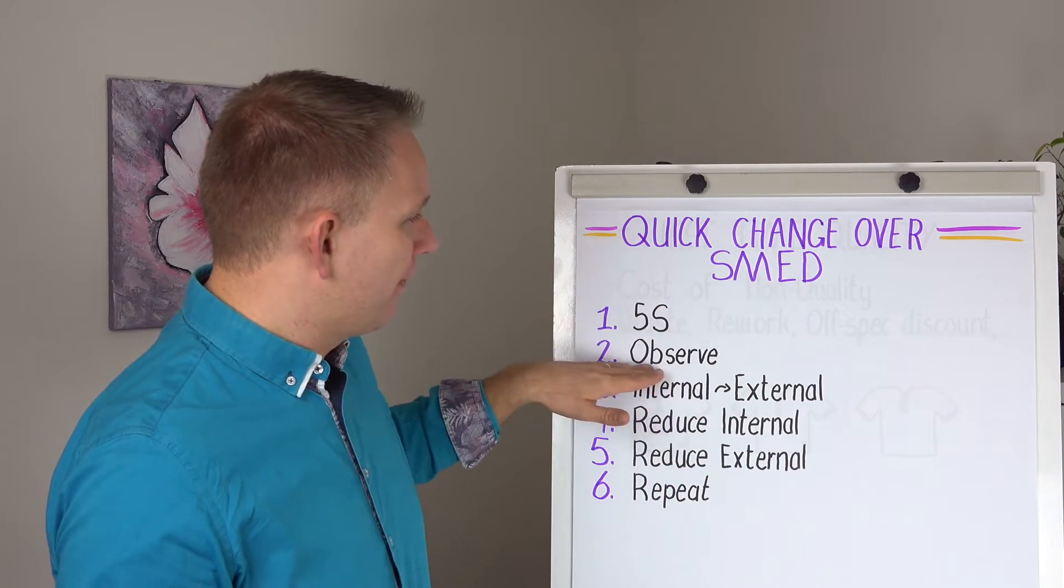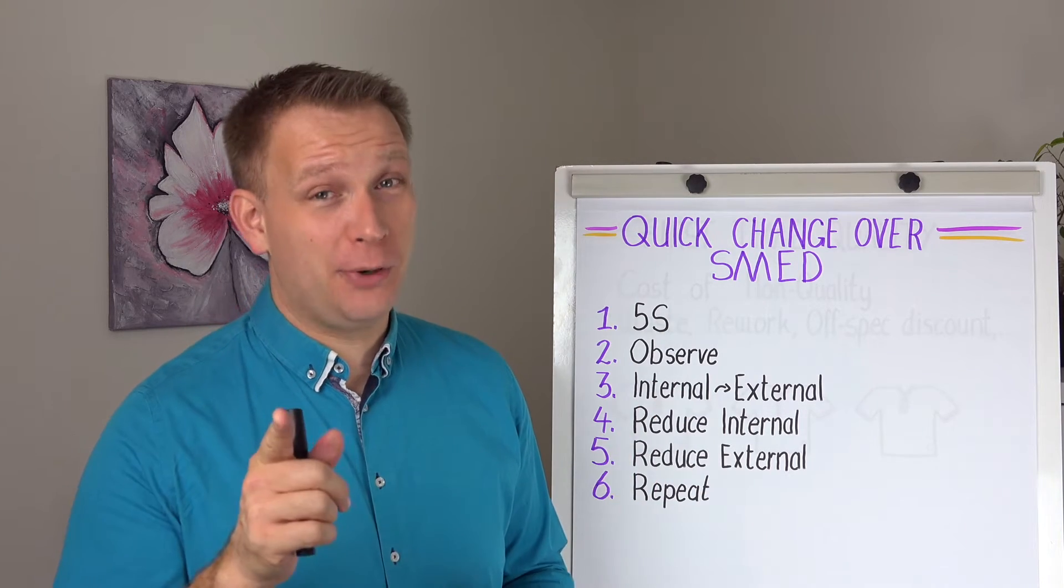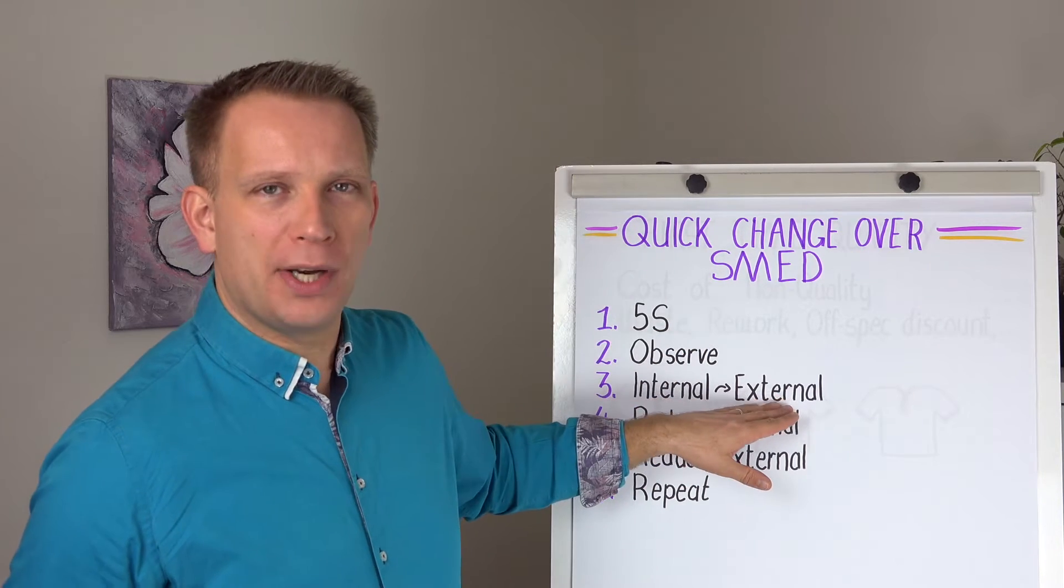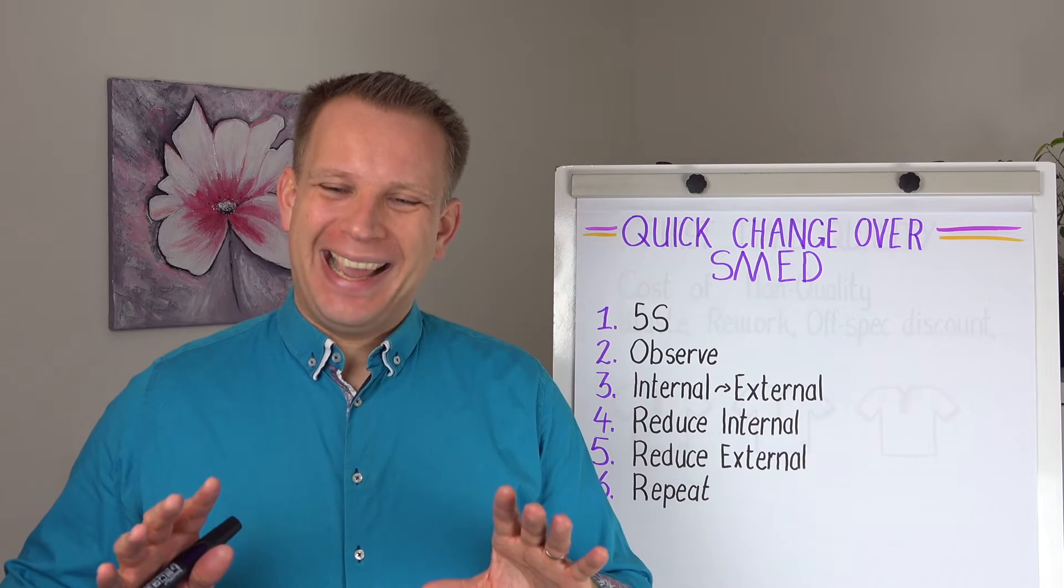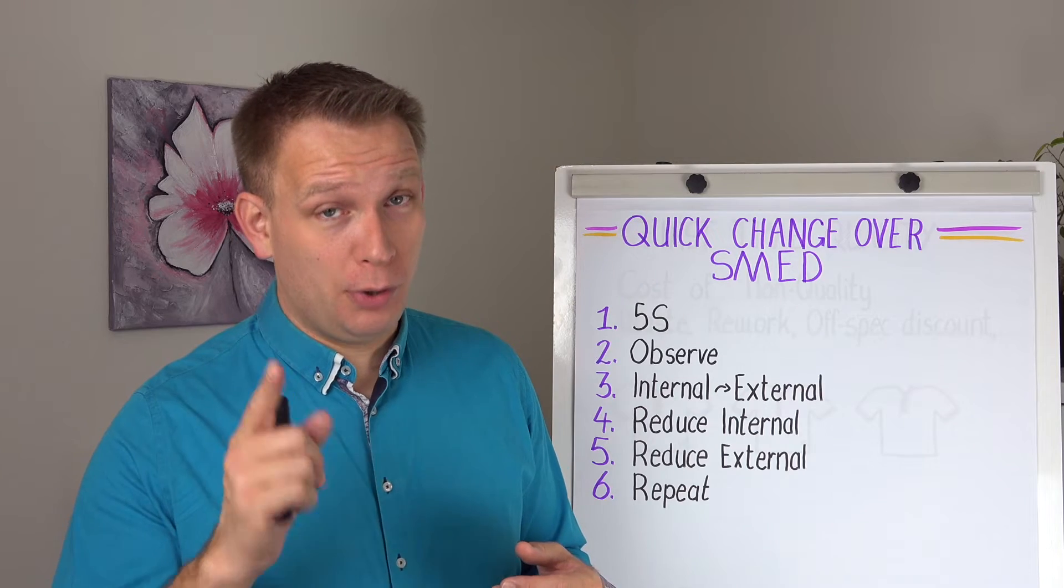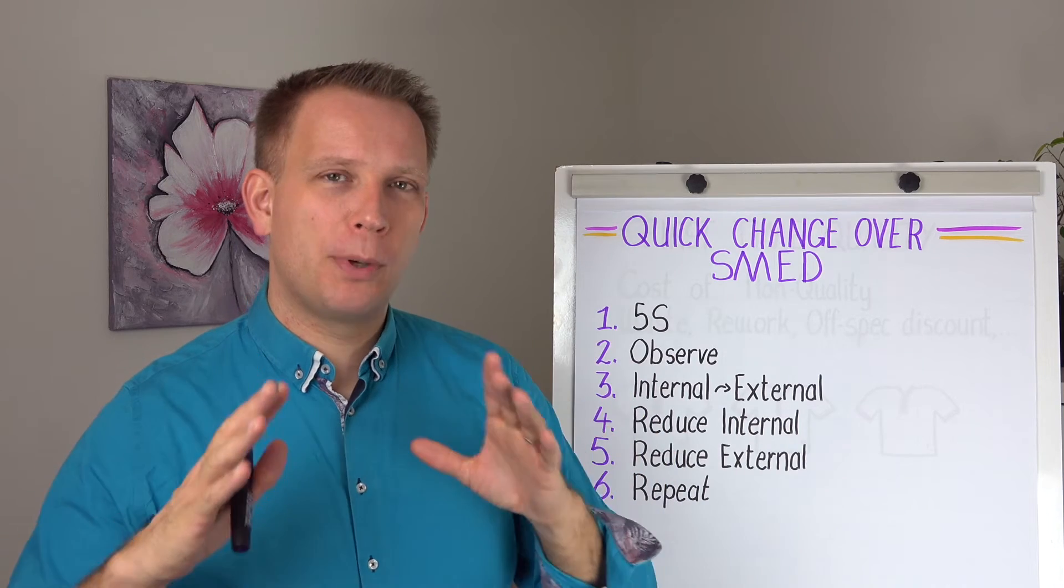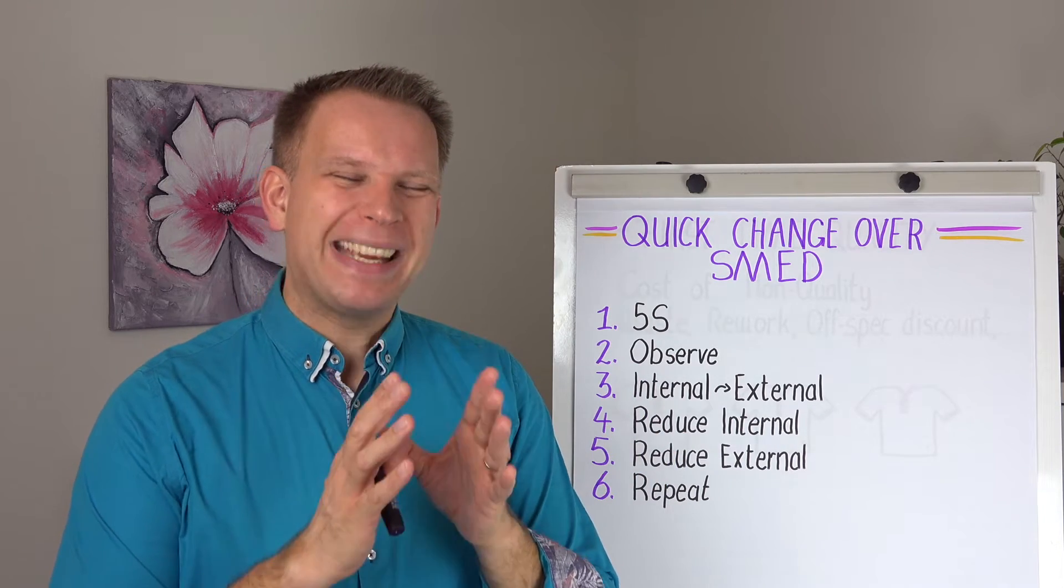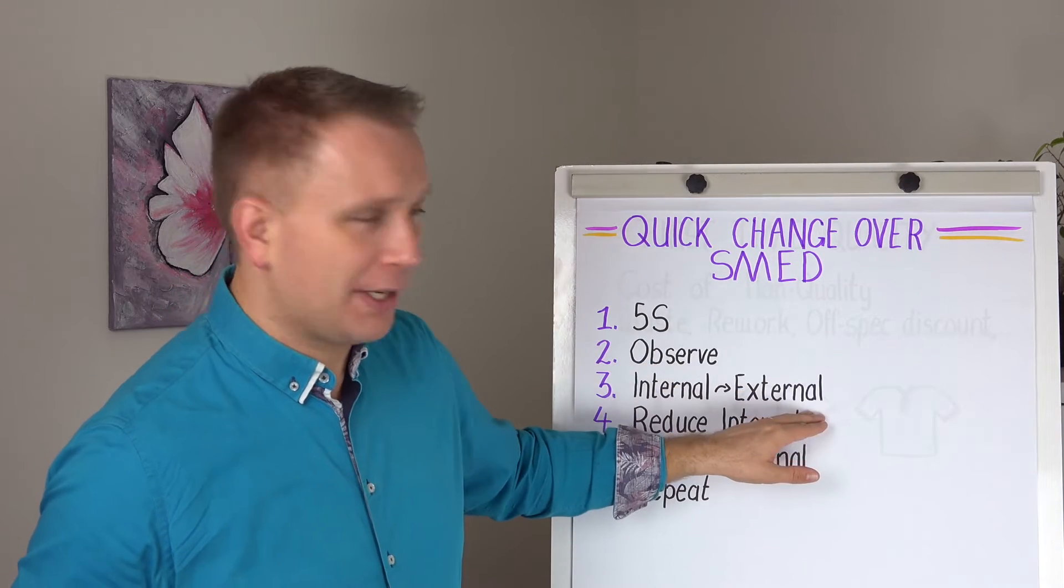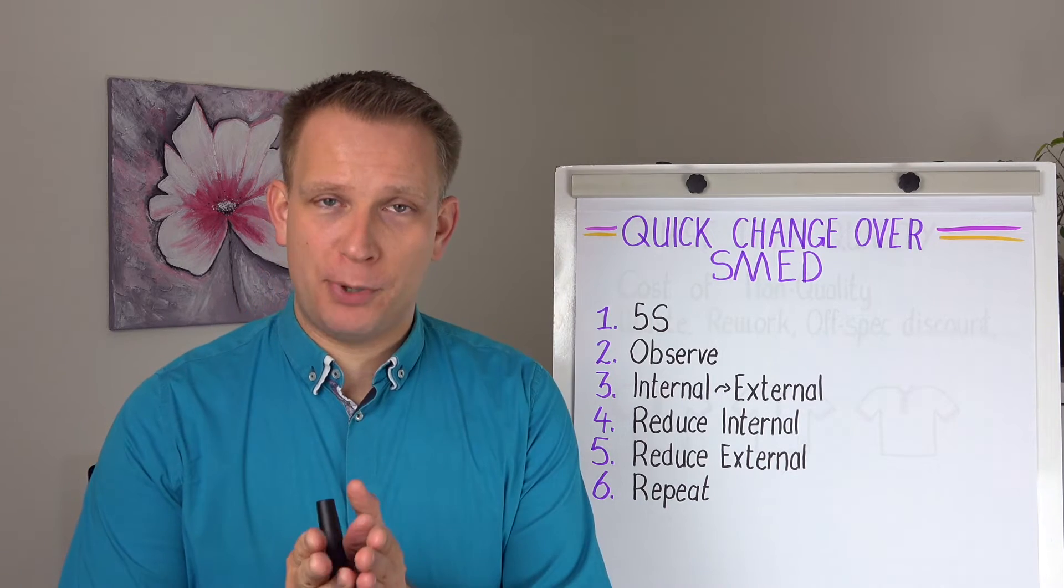So we observe very closely which tasks do we have in our changeover. Video is a very good way to do this, by the way. And then we check what is internal and what is external. Or better yet, I mean we can observe what is internal and external right now. You should also observe what is external, so what are people doing to prep your changeover. But more importantly is to think about how can we make as many of our tasks external, so that the actual machine downtime on the changeover is as short as possible.